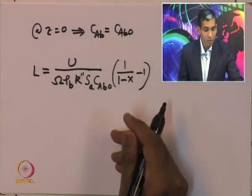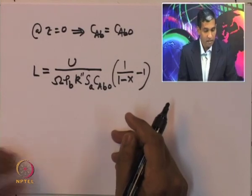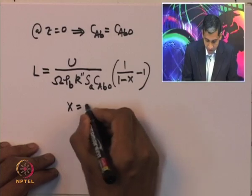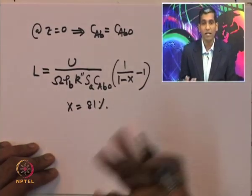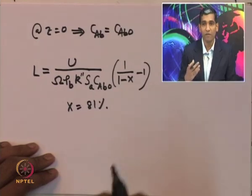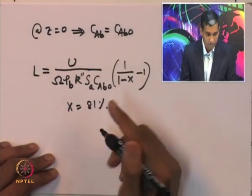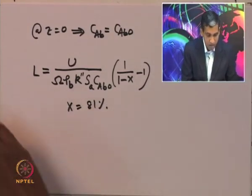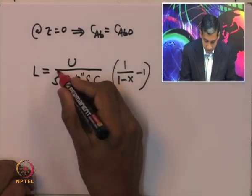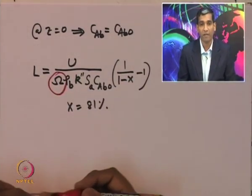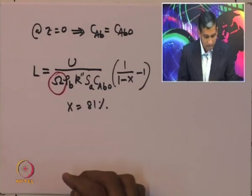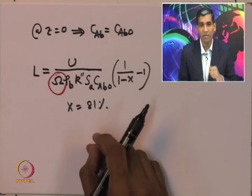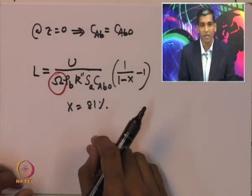We can integrate this expression using the boundary condition that at z equal to 0, the concentration equals C_AB0. On integration, the length of the reactor is given by U divided by the overall effectiveness factor, times rho_B times K times C_AB0 times the quantity 1 divided by (1 minus x) minus 1. Suppose the conversion has to be 81 percent - then we need to find what length of reactor achieves this conversion.